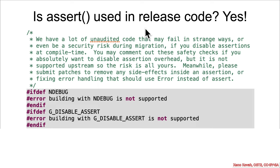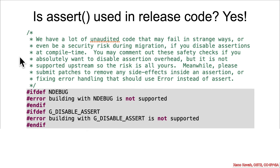That's good, but there's an interesting comment in the code: they say they have a lot of unaudited code that may fail in strange ways or even be a security risk during migration if you disable assertions at compile time. They at least recognize and call it out — they're using asserts for actual security checks. There are compile options that can disable asserts, and if you do that, the code loses a lot of sanity checks and will almost certainly have buffer overflows and everything else.